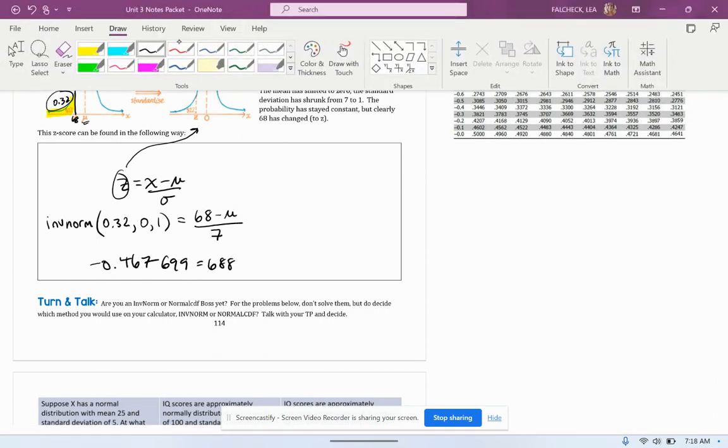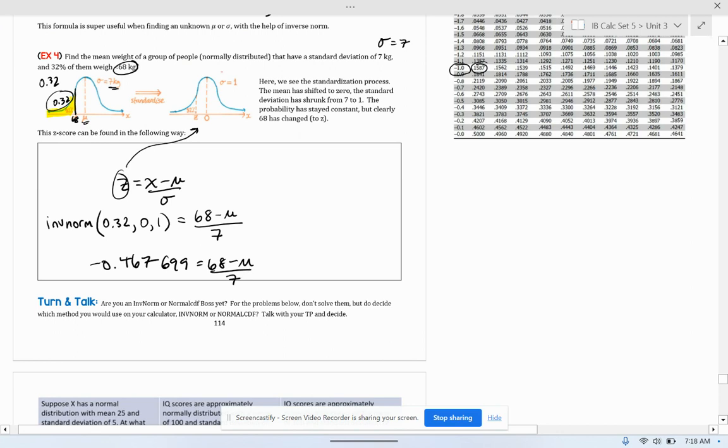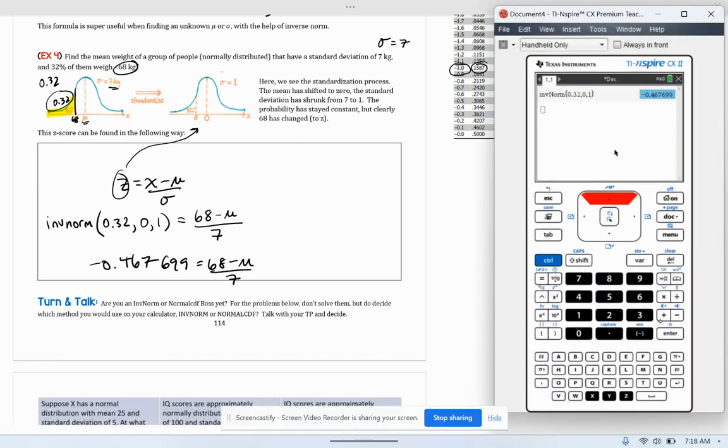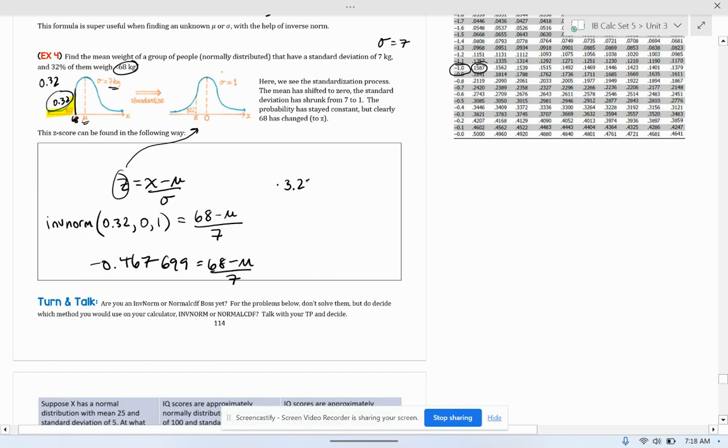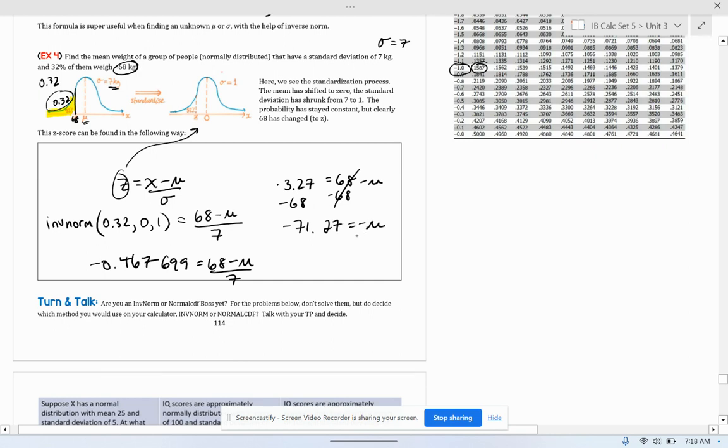And then it becomes super easy to solve something like this. You just multiply both sides by that seven. So you would get negative 3.27. I'm going to subtract 68. Negative 71.27 equals negative mean. Divide both sides by negative one. And I get a mean of 71.27 kilograms. That is the unknown mean that we were looking for. So that's how you use z-scores to standardize and find an unknown sigma or unknown mean in a problem.